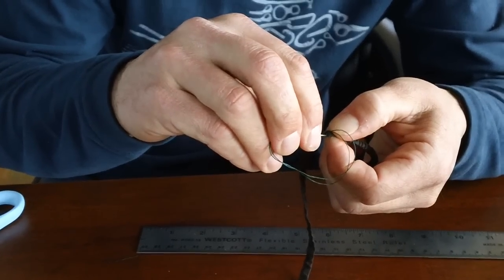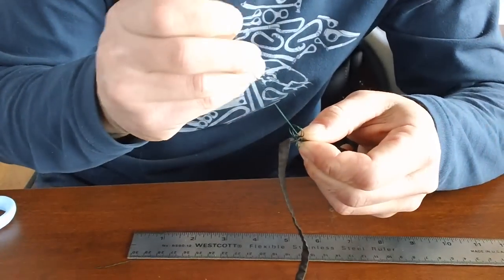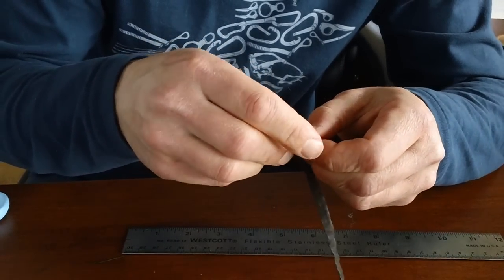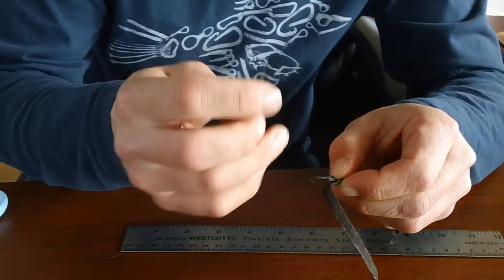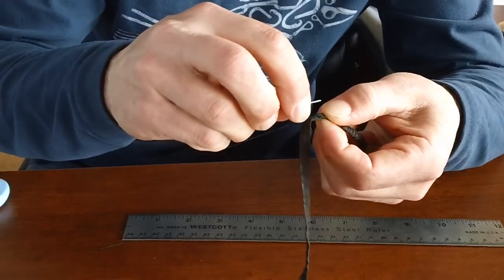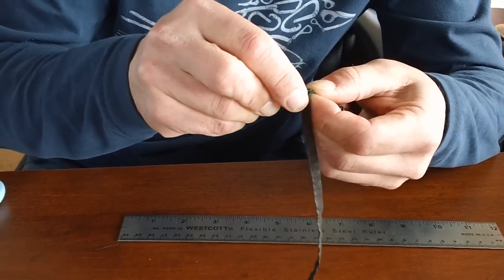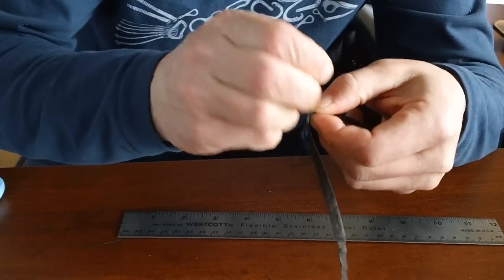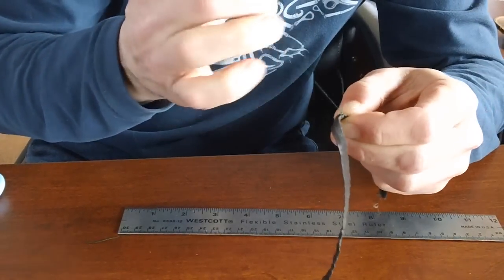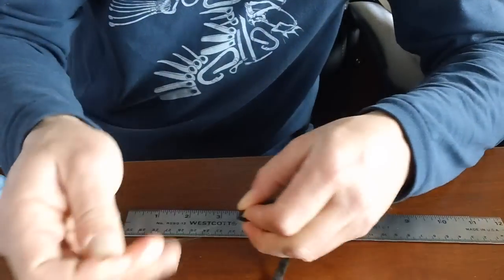Tie it just like we did the other side. Going through my loop once. Going through my loop twice. And there we have it. We'll do one more. Safety. Trim off our excess.